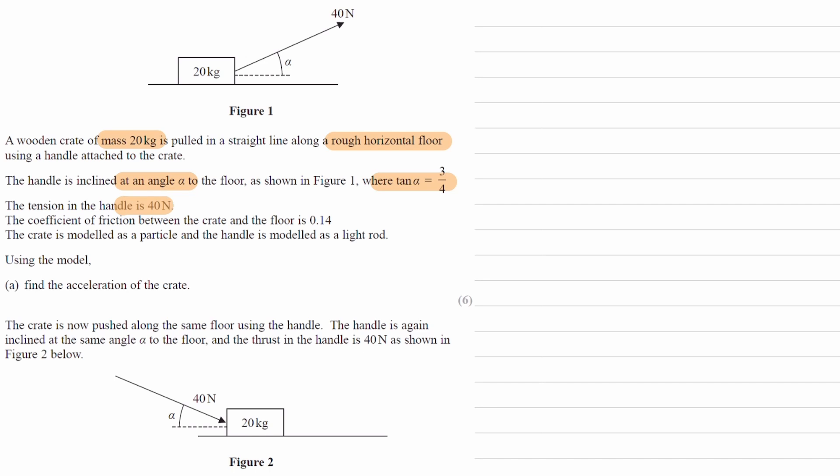The tension is 40 newtons, as again shown in the diagram. We're told the coefficient of friction between the crate and the floor. The crate is modelled as a particle and the handle is modelled as a light rod. Use the model to find the acceleration of the crate.